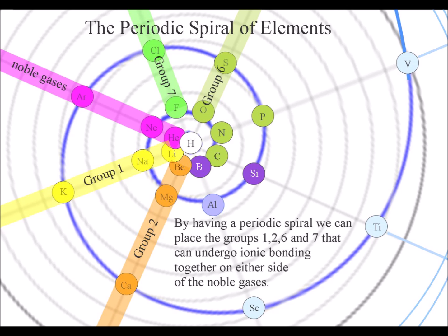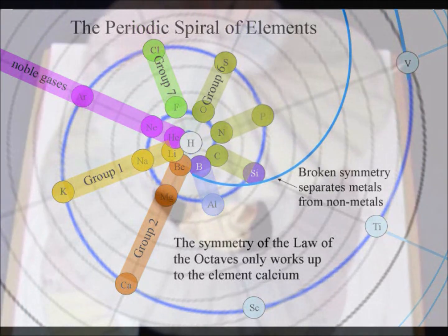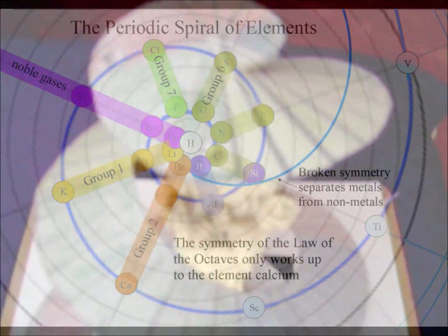Also, by having a periodic spiral, we can place the groups that can undergo ionic bonding together on each side of the noble gases.